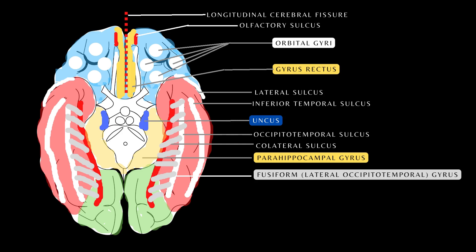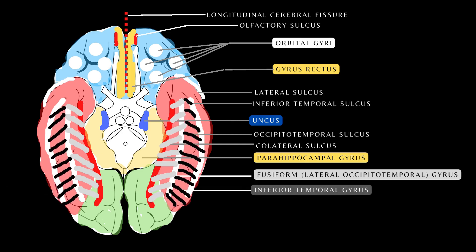Lateral to the fusiform gyrus is the inferior temporal gyrus. An important structure seen on the occipital lobe is the calcarine sulcus, and posteriorly is the lingual gyrus.